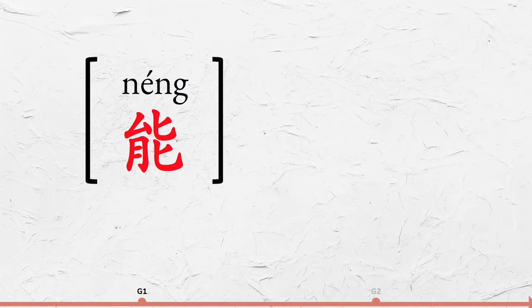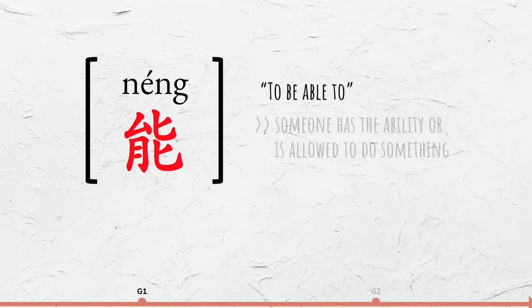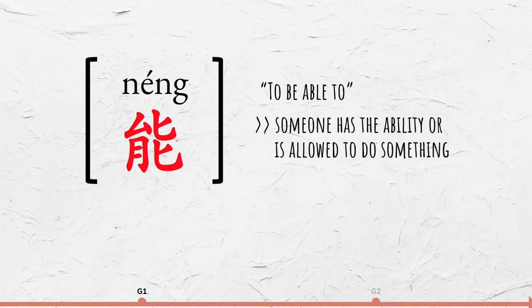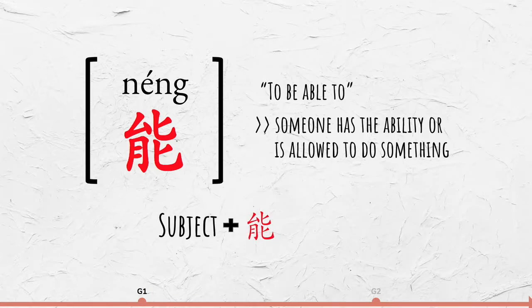能 can be translated as to be able to. It means someone has the ability or is allowed to do something. The structure is subject plus 能 plus verb phrase.